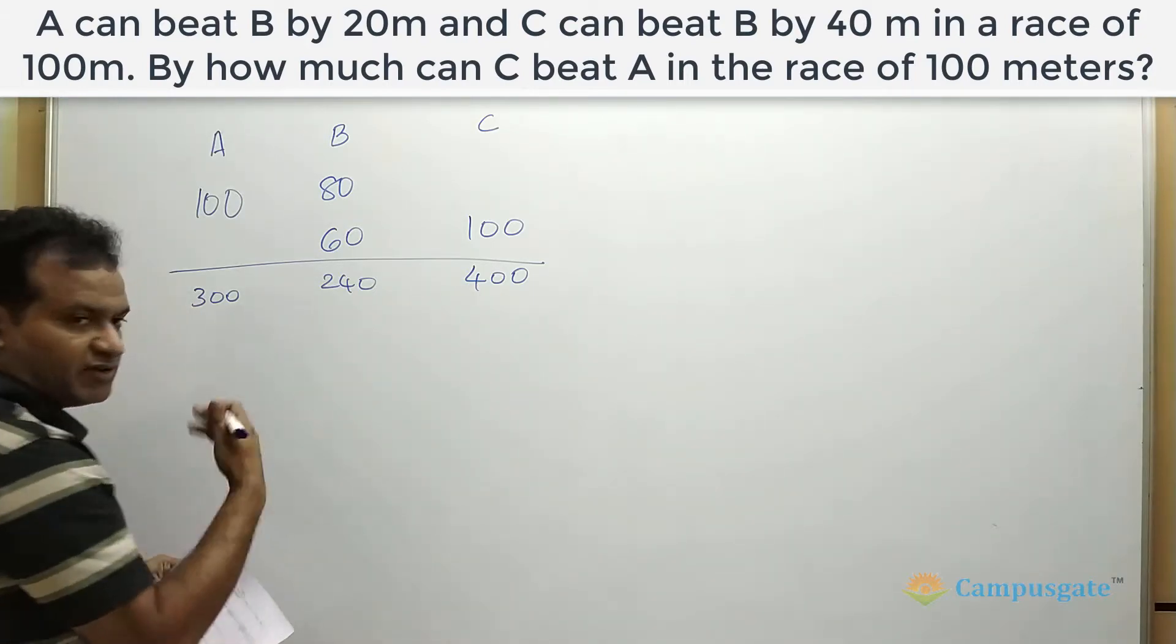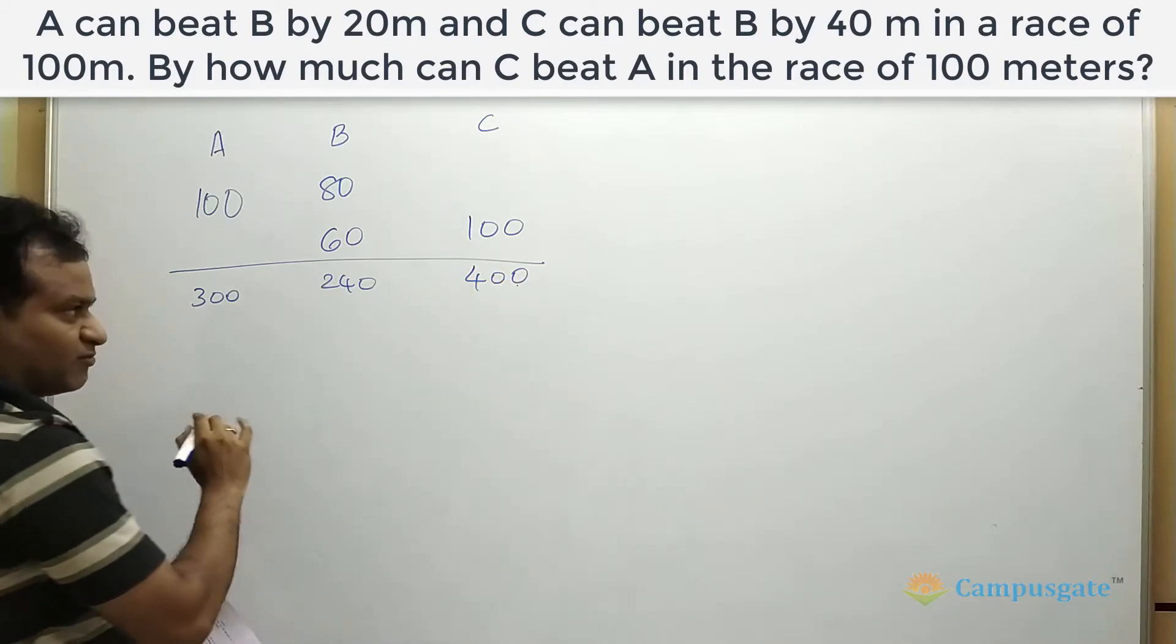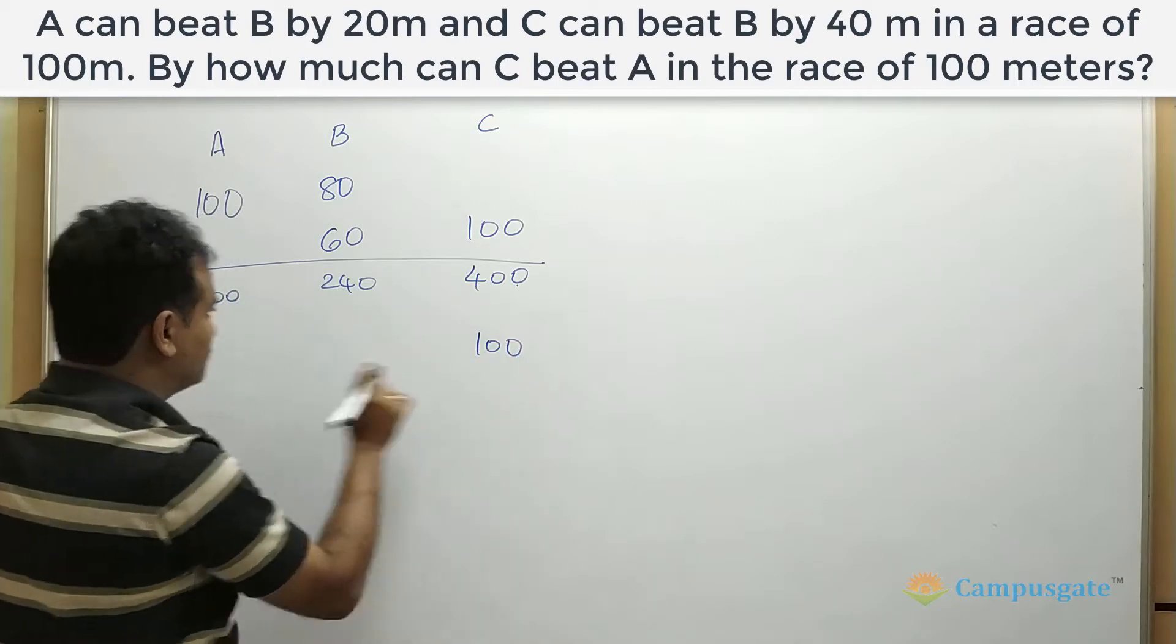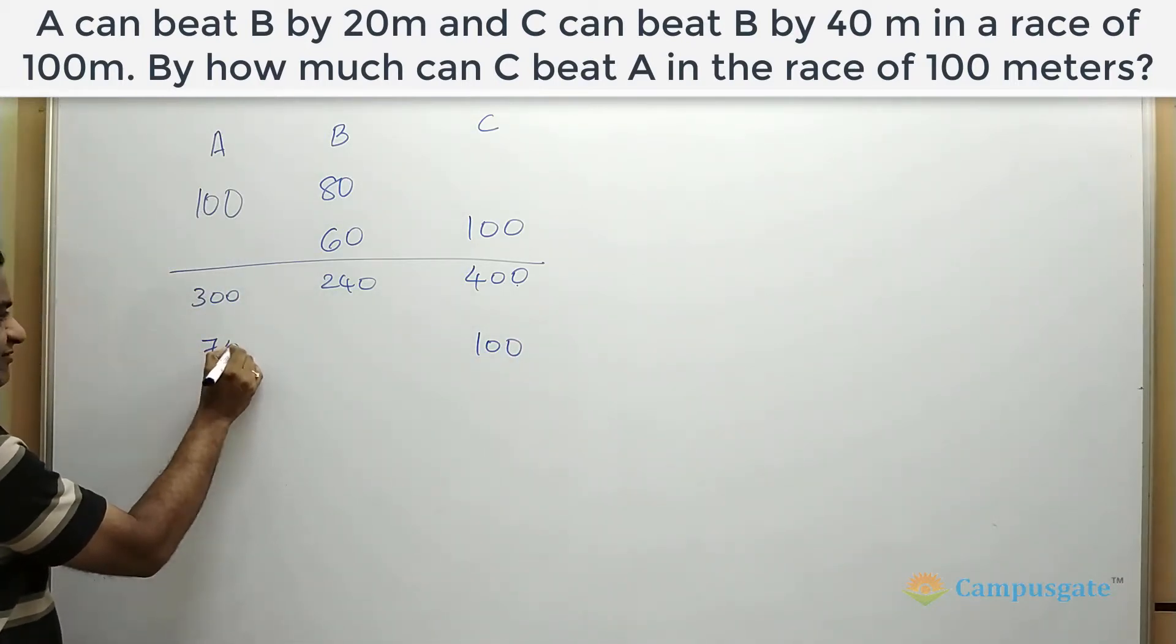Definitely C is the faster runner, right? Now, let us divide these two numbers by 4. So if we divide these two numbers by 4, if C covers 100, how much A will cover? 300 by 4 will give you 75.